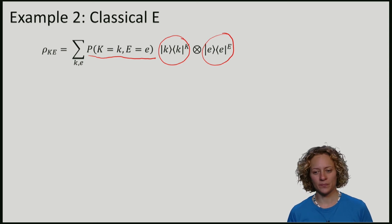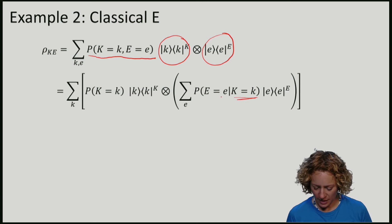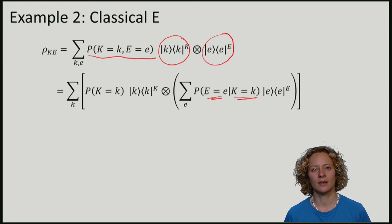Or if you want, I can reshuffle this by writing here the probability of having a certain k and depending on the key k, I have a particular symbol e. What does the condition that Eve is ignorant about the key mean in terms of this classical distribution?